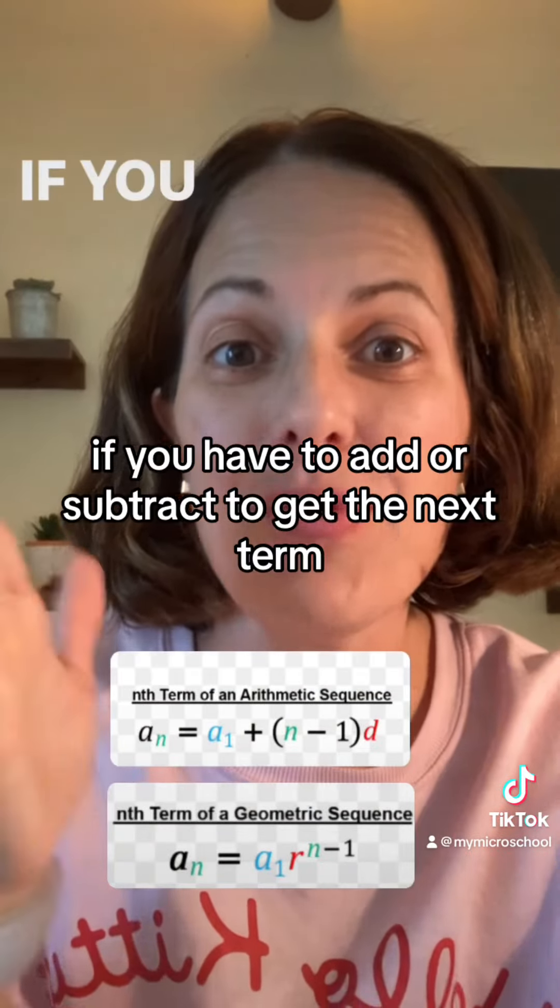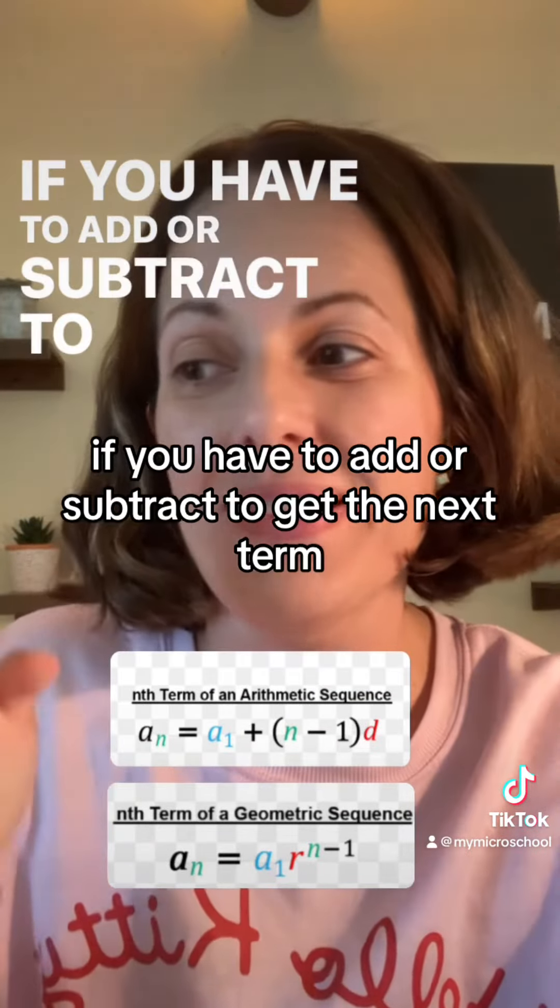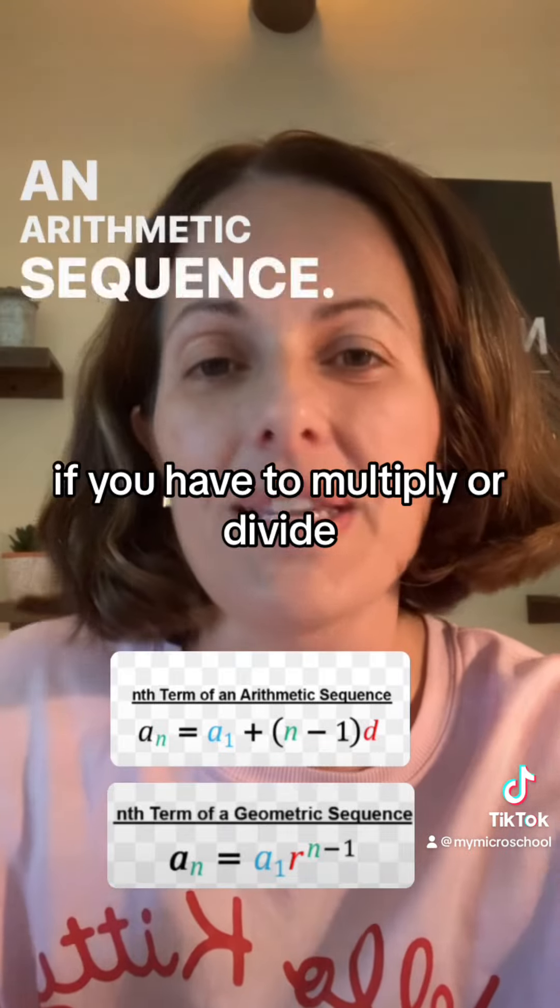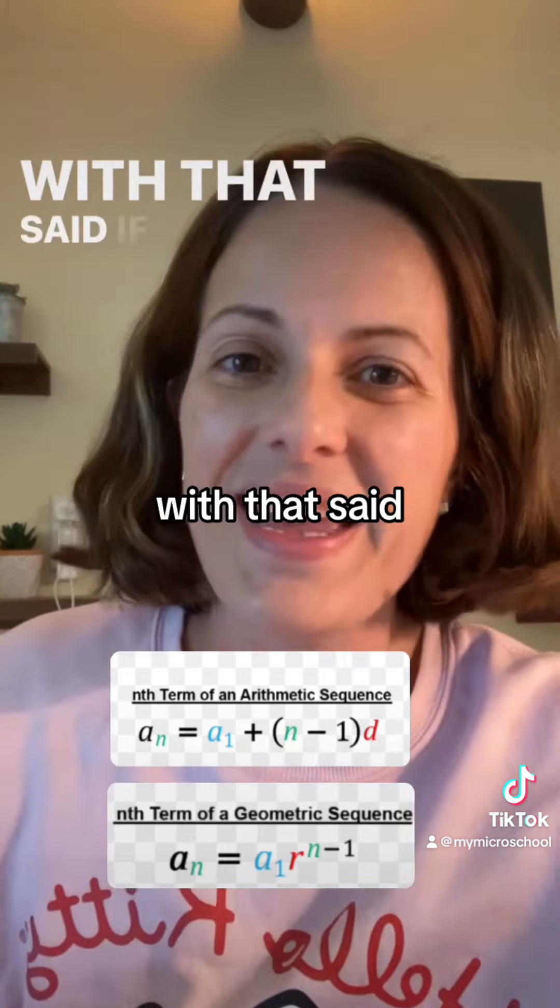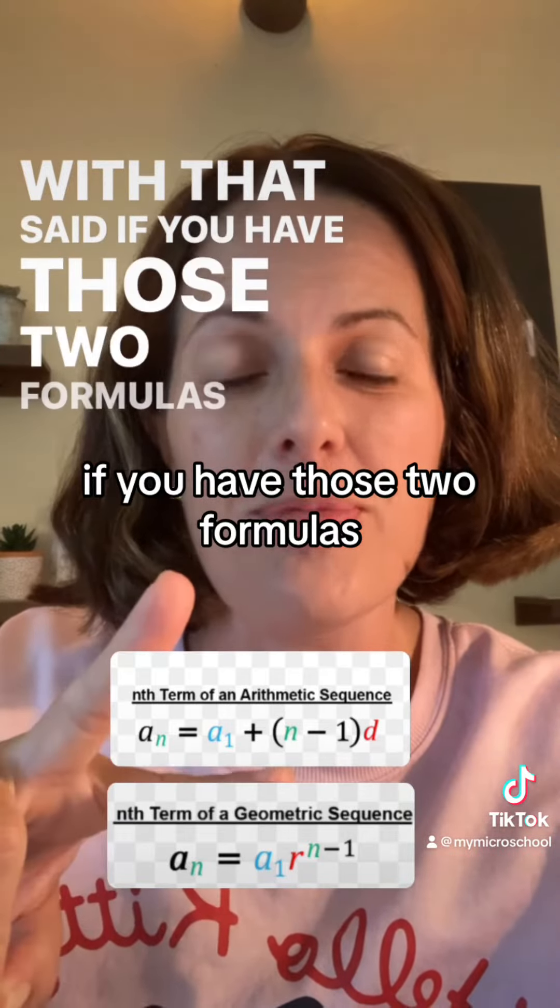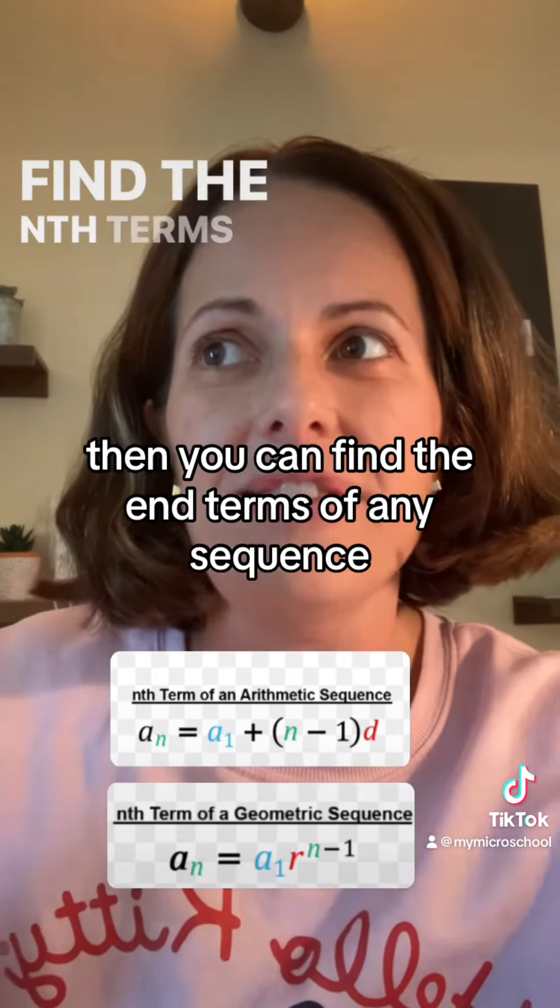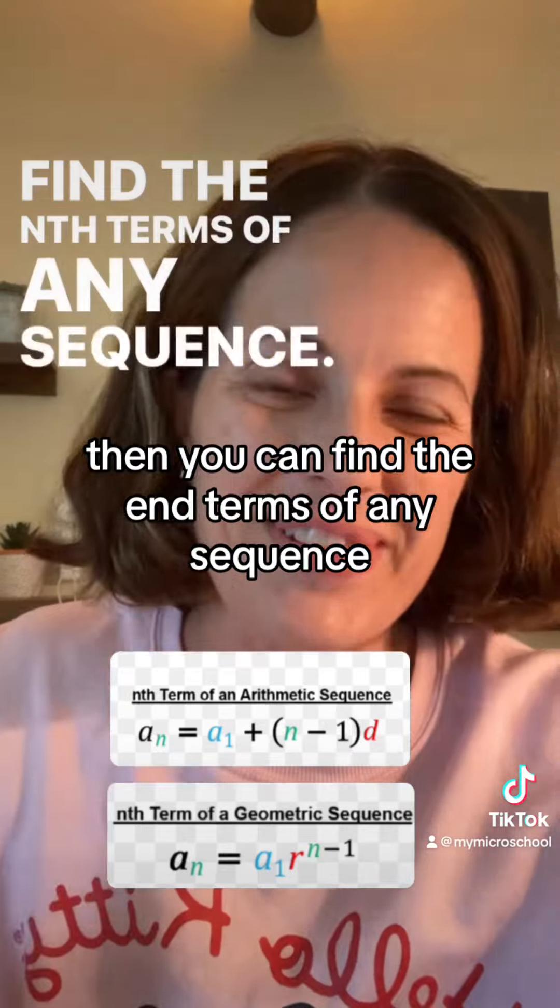Conclusion. If you have to add or subtract to get the next term, you have an arithmetic sequence. If you have to multiply or divide, you have a geometric sequence. With that said, if you have those two formulas, then you can find the nth terms of any sequence. I hope you enjoy.